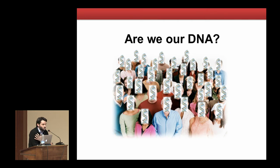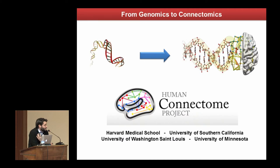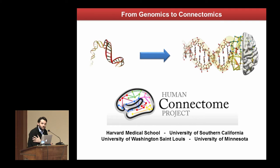But the idea is that probably this is not enough. When we talk about intelligence, we should talk about other factors. The answer, at least for me, is to look not only at genomics but also at connectomics — to move from the study of the DNA to the study of the brain connectome.